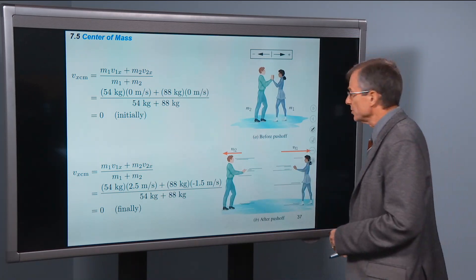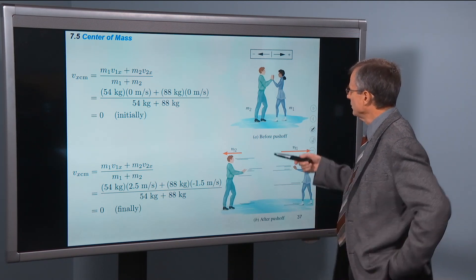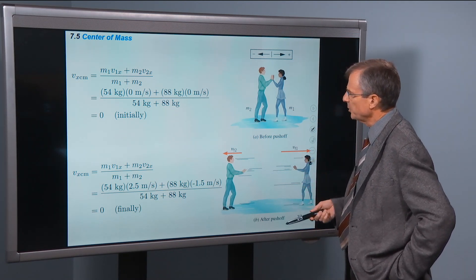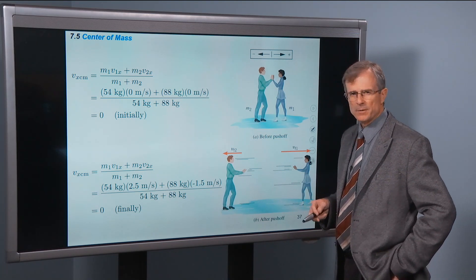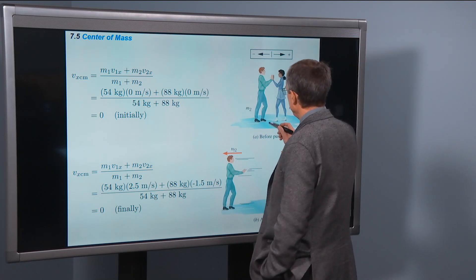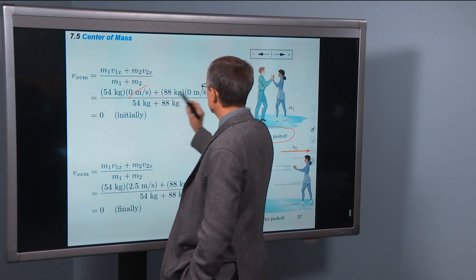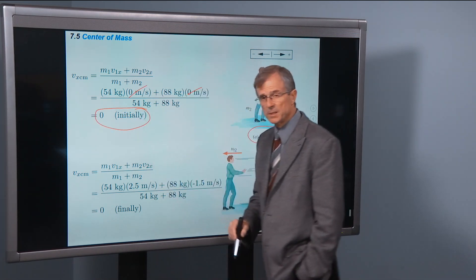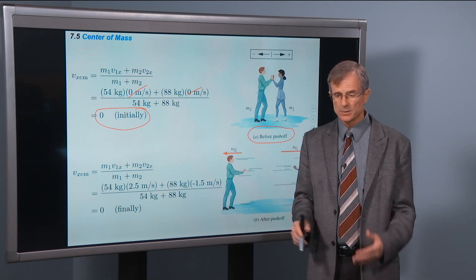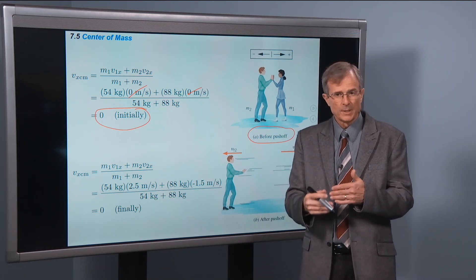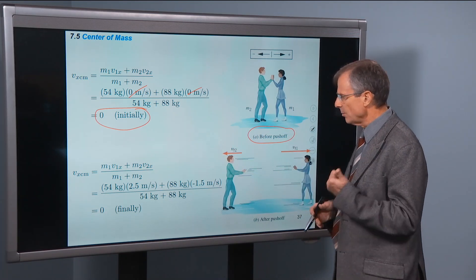Alright, so now we can actually go back to the problem with the man and the woman pushing off from each other. What is the initial velocity of the center of mass of this man and this woman? Well, they're not moving initially before the push-off, so both of their velocities are zero. And so the velocity of the center of mass is zero. That makes good sense because neither of them is moving, so their center of mass is right somewhere between their two bodies.